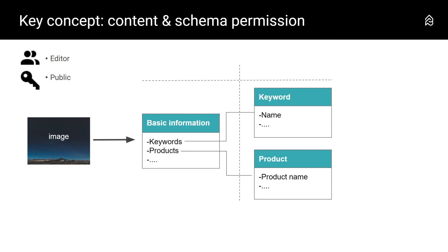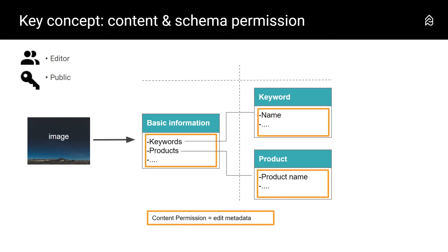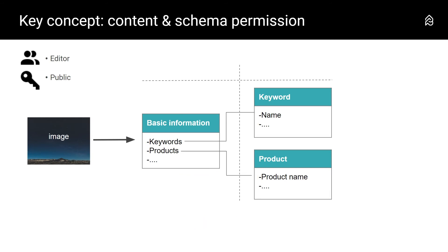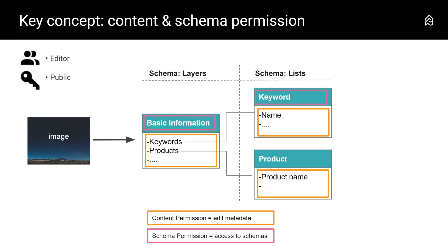If you allow editors to create new products, it won't last long before that product list becomes a mess. So how do you do that? With what we have learned so far, you can either give or not give 'edit metadata' permission — we call that a content permission. If you have the content permission to edit metadata, you can edit metadata; if you don't have that permission, you can't. To allow this fine-tuning, Picturepark offers schema permissions.